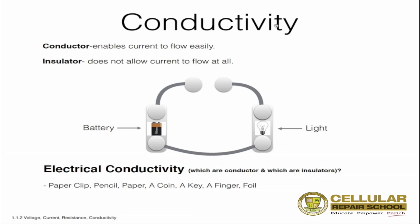So again, you have a conductor which enables current to flow, and you have an insulator which does not allow current to flow at all. I'll give you guys an example.